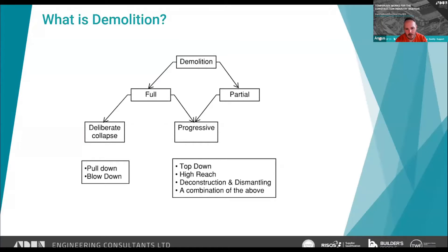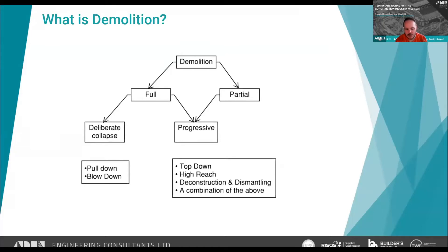High reach uses a specially modified excavator with increased counterweight and a long arm, allowing it to reach high up onto a structure and into the building with a tool — a breaker, muncher, or pulveriser. Deconstruction and dismantling is where you take a building apart, essentially the reverse of building it, using wire sawing, burning, or unbolting things.